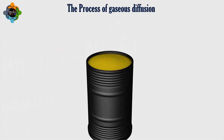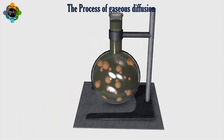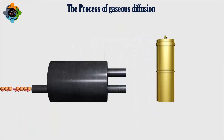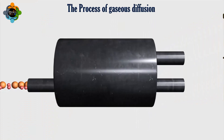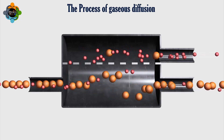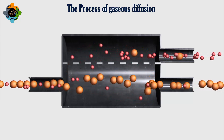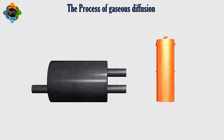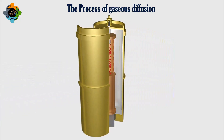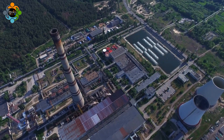Another method, though less common today, is gaseous diffusion. Here, UF6 gas is forced through a porous membrane. Since lighter molecules move faster, uranium-235 passes through the membrane slightly more often than uranium-238. However, the difference is so small that this method requires thousands of stages to achieve meaningful enrichment, making it less efficient than centrifuges.